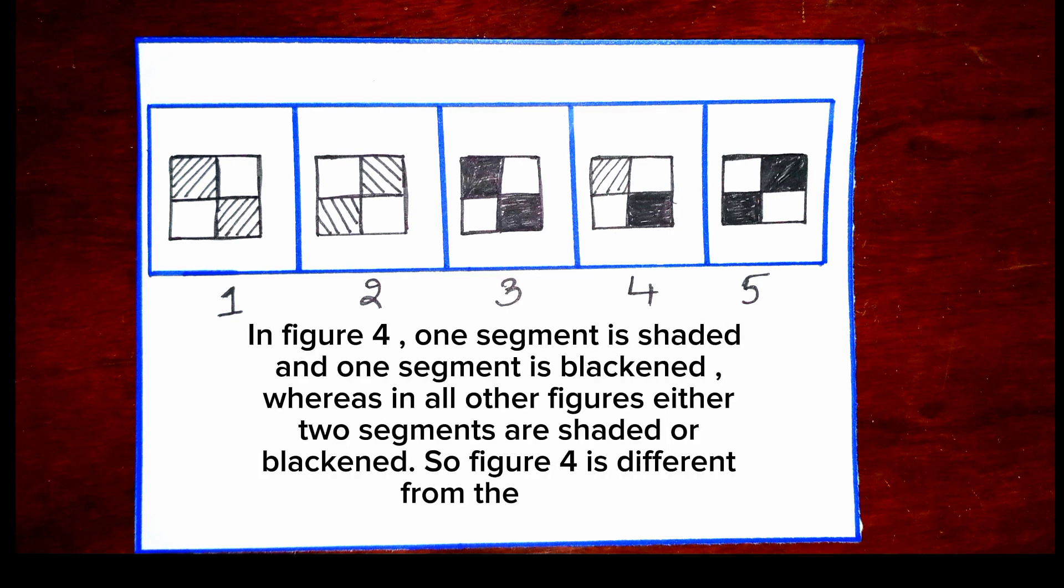In figure four, one segment is shaded and one segment is blackened, whereas in all other figures either two segments are shaded or blackened. So figure four is different from the rest.